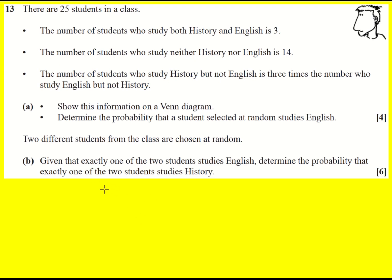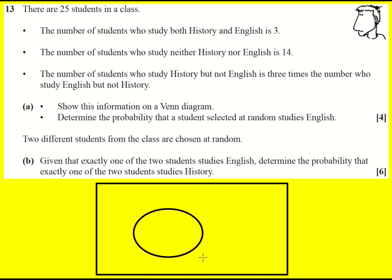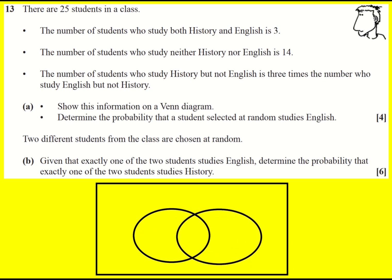We're asked in part A to show this information on a Venn diagram. I'm going to label this one History and this one English. We're told there are 25 students in total. The number of students who study both History and English is three, so I can put that in the middle.